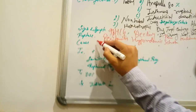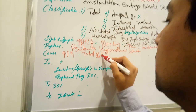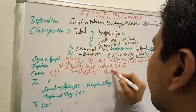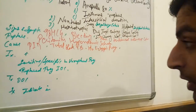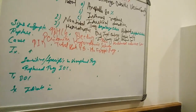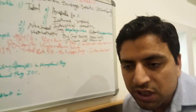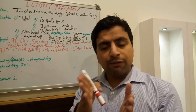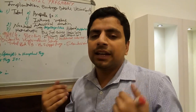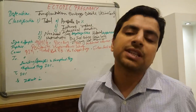Now the causes: PID is the most common cause, followed by tubal block, tuberculosis (TB), and a history of previous ectopic pregnancy. Other causes include endometriosis — where the endometrial layer implants outside the endometrial cavity at another ectopic site. Adenomyosis is when the endometrial layer is present within the myometrium.